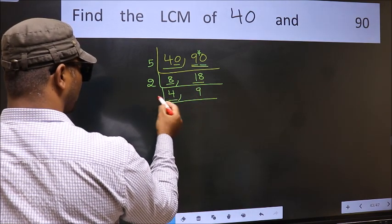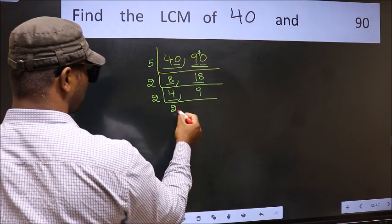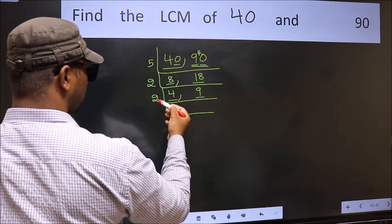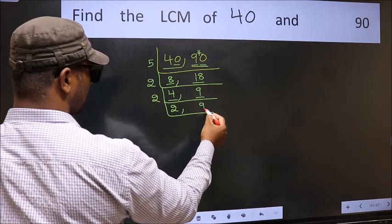Now here we have 4. 4 is 2 times 2 is 4. The other number 9, not divisible by 2, so we write it down as it is.